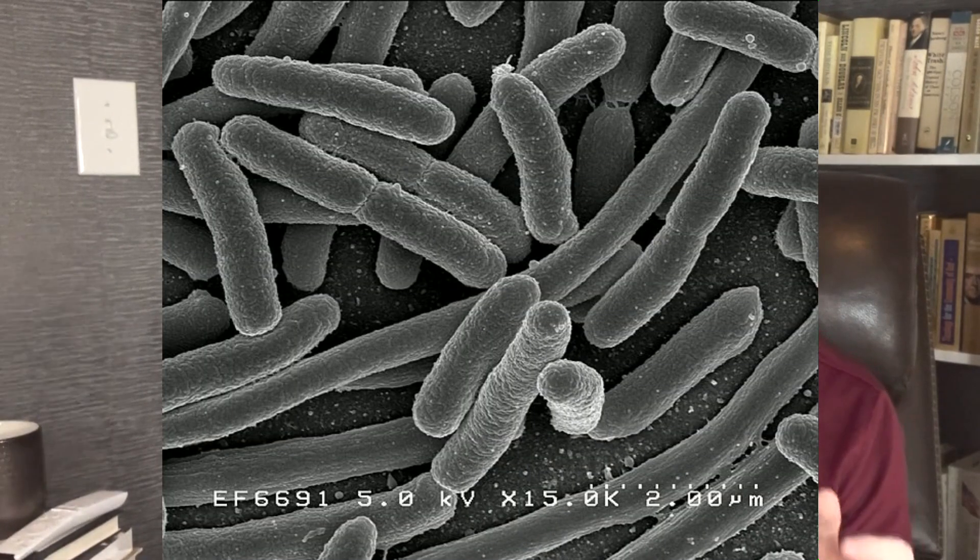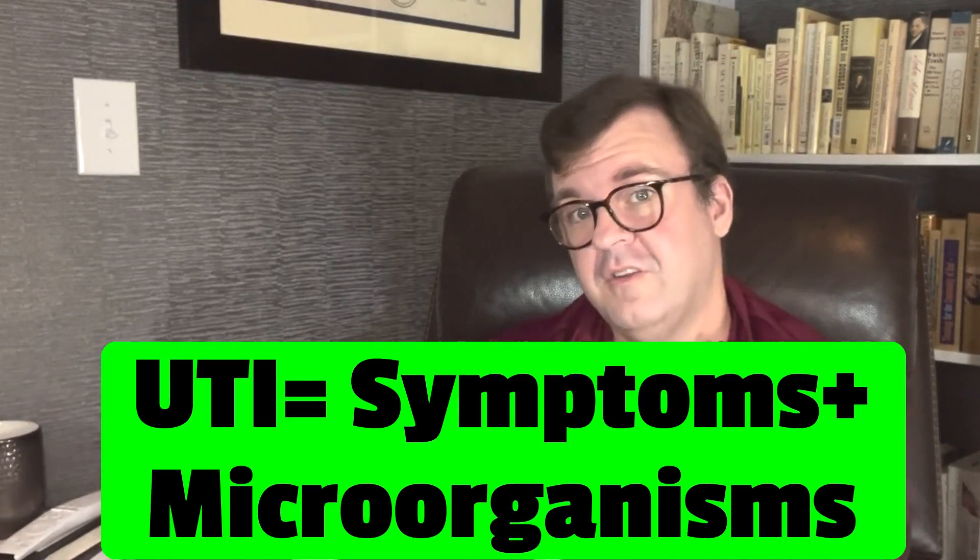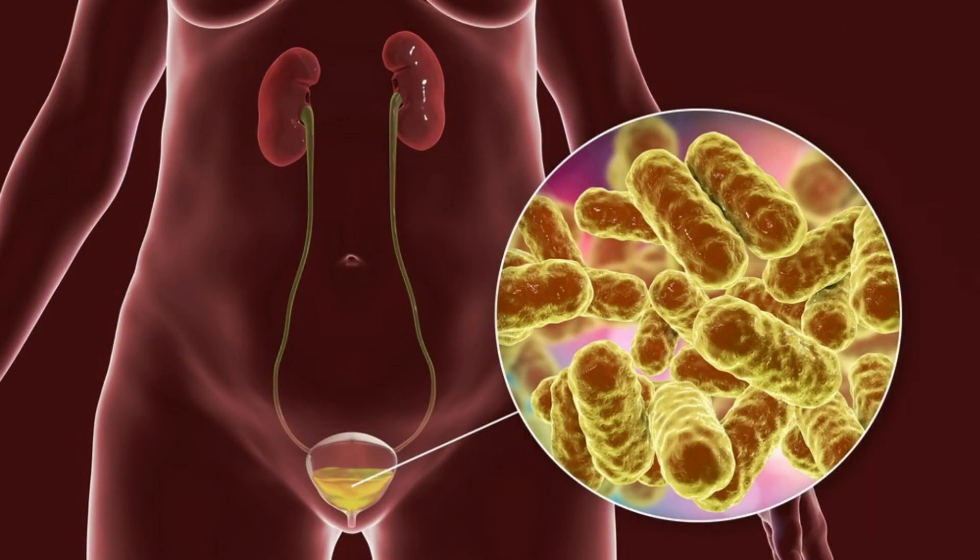So let's just start with some basic definitions. A urinary tract infection is the presence of bugs in the urinary system plus those bugs are causing symptoms. The most common type of urinary infection is probably cystitis, which is inflammation of the bladder, and the symptoms are dysuria or burning with urination, frequency, urgency, what we call suprapubic discomfort, and sometimes even blood in the urine. So basic definition: a urinary tract infection is symptoms plus bugs.